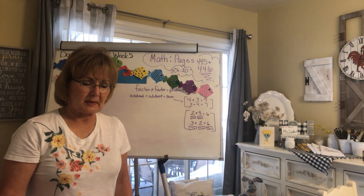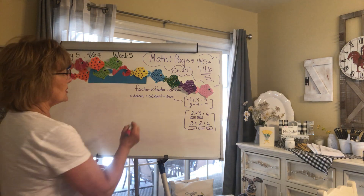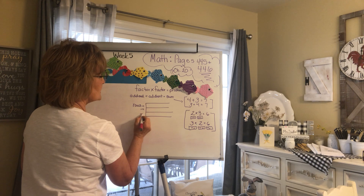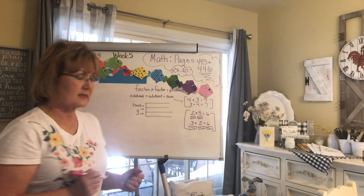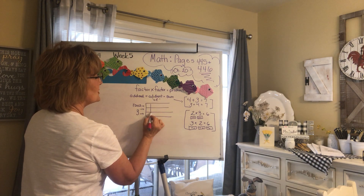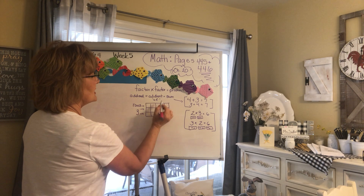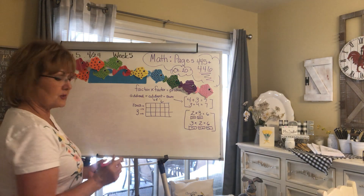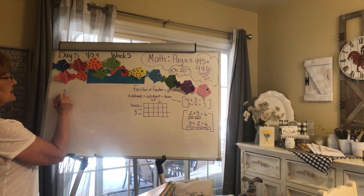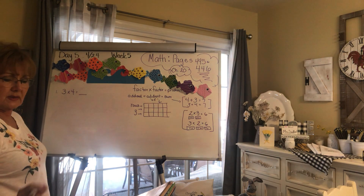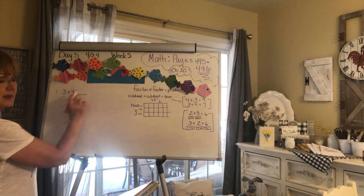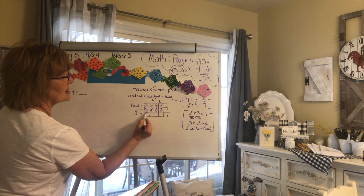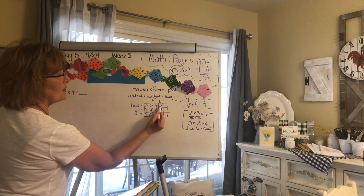For number one, it says write the multiplication sentence. You have three rows — remember, rows are going across. You have three rows of four, so your multiplication sentence would be three times four. Count by fours: four, eight, twelve — that equals twelve.